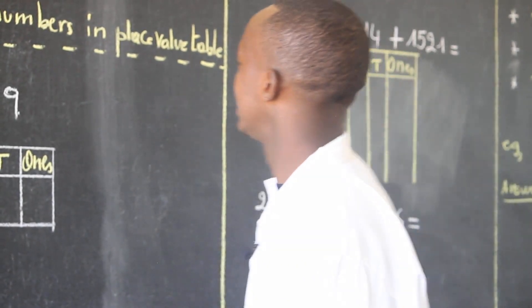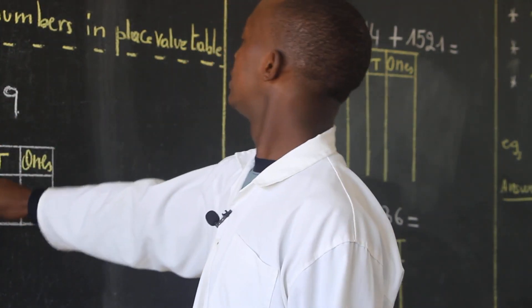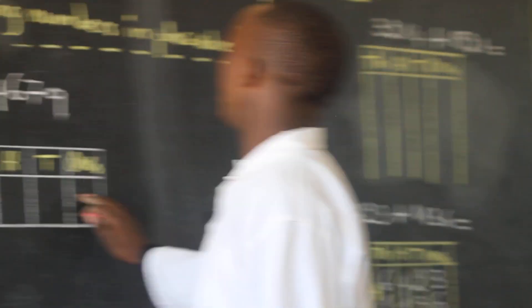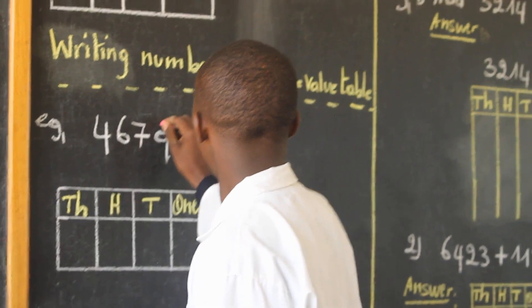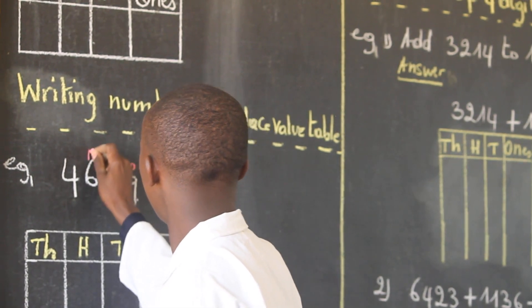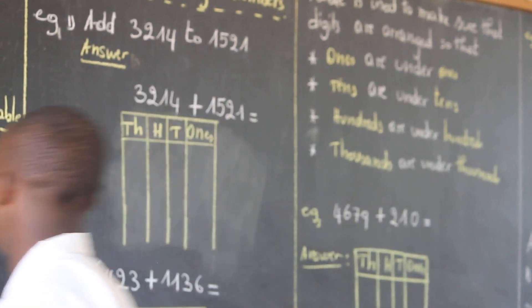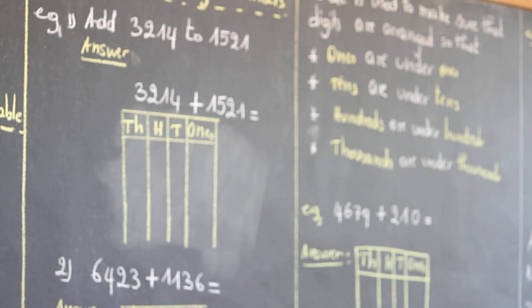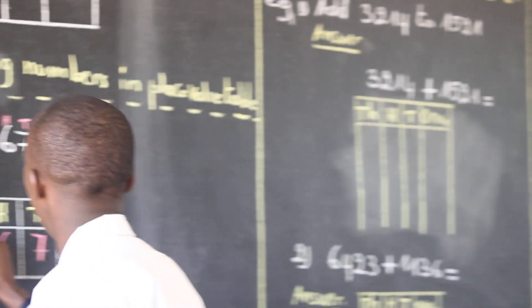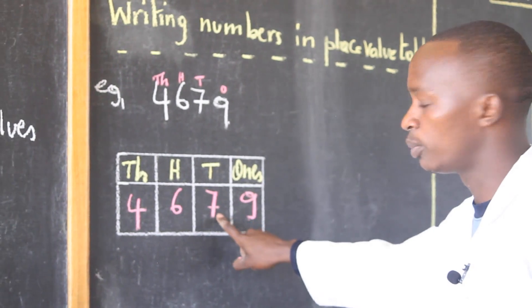When we are going to write numbers in the place value table, we first start from our right side by attributing letters. We say this should be in the place of ones, tens, hundreds, and then thousands. So as I am going to start from my right side, here I will put nine, then here I will write seven because seven is under tens, then six under hundreds, then finally four. Friends of mine, do you remember how to write numbers in the table?